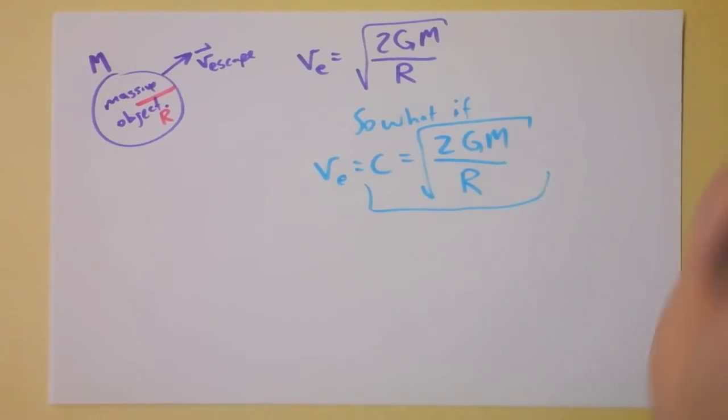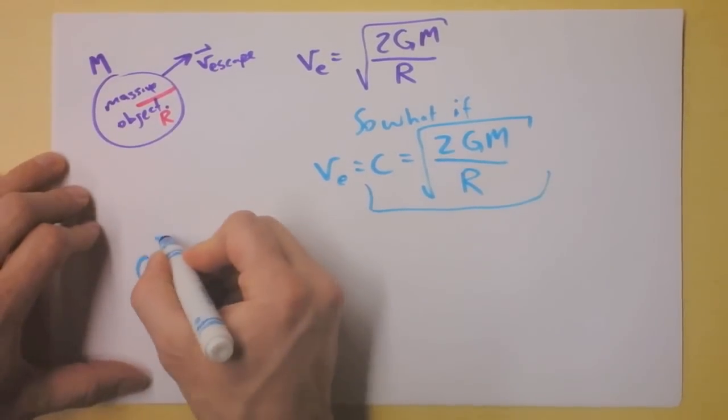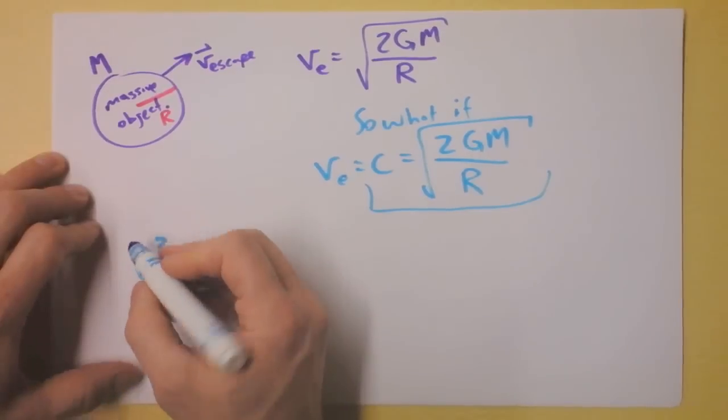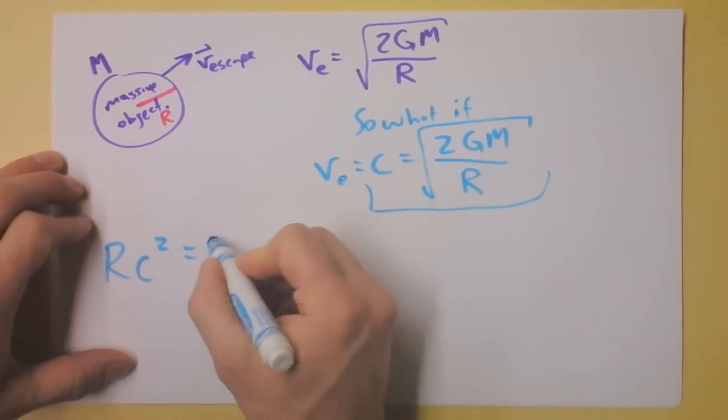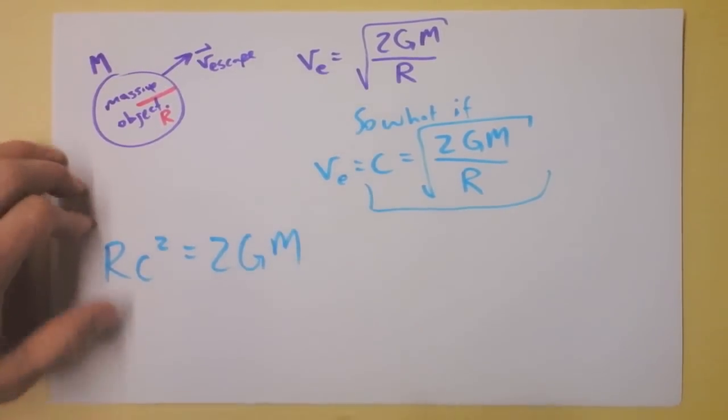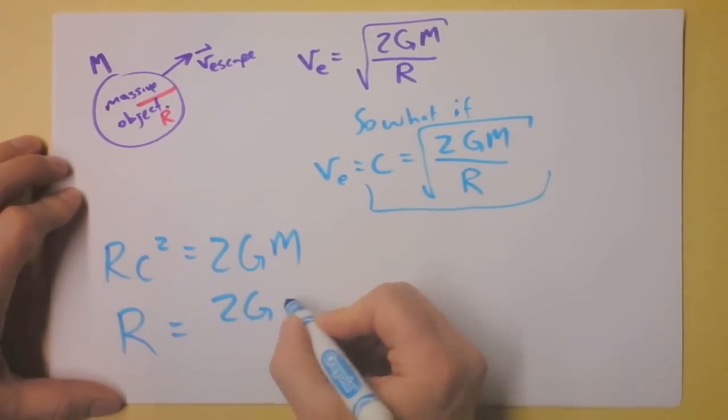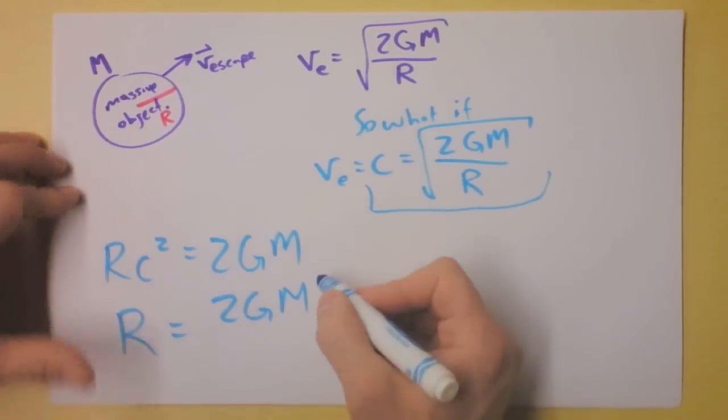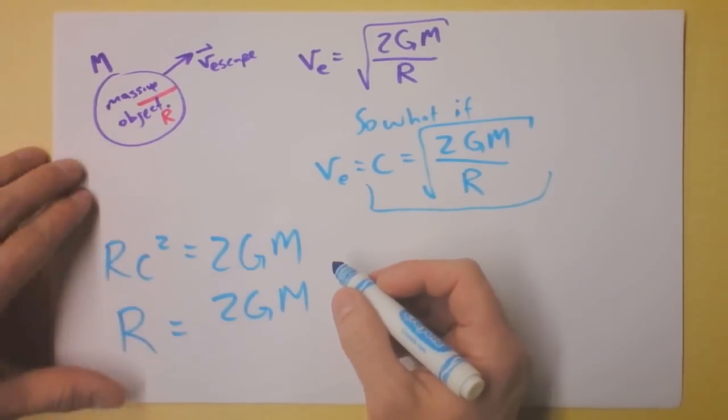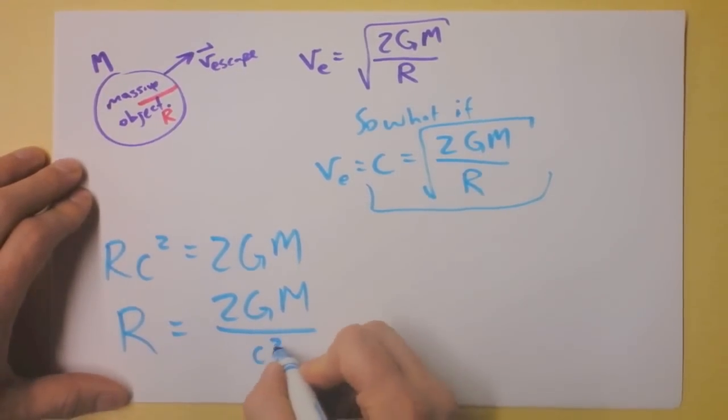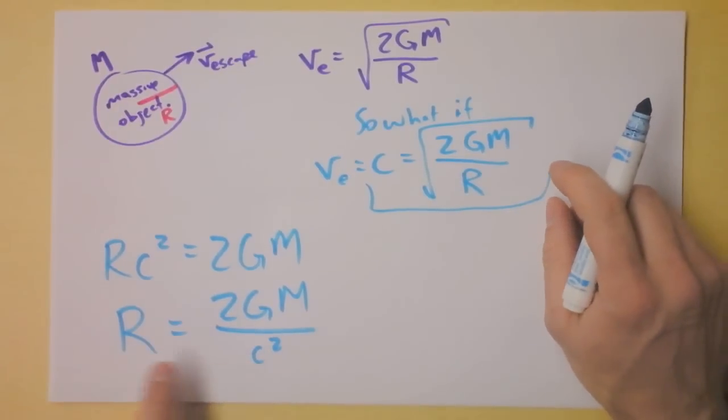In fact, something if the radius is exactly what solves this equation right here, something that light itself can't escape from. So let's solve this for R. C squared times R is 2 times G times M, and the radius is going to be 2 times G times the mass of this dangerously massive object divided by the speed of light squared.